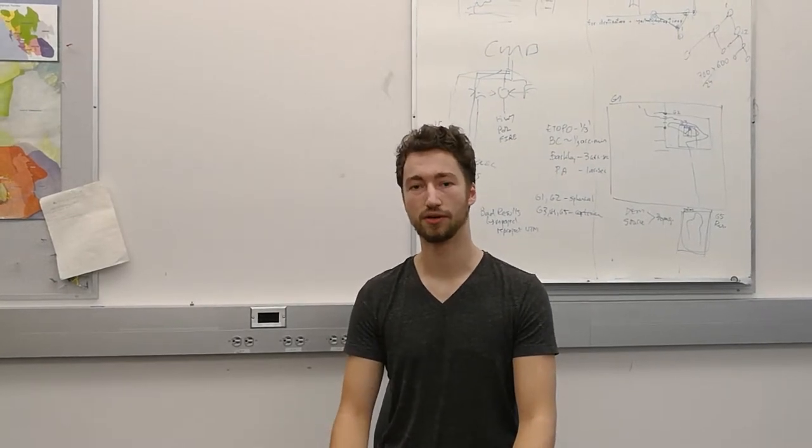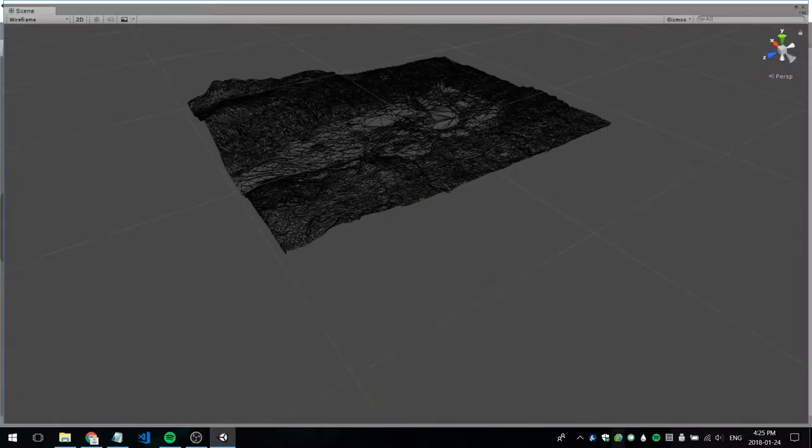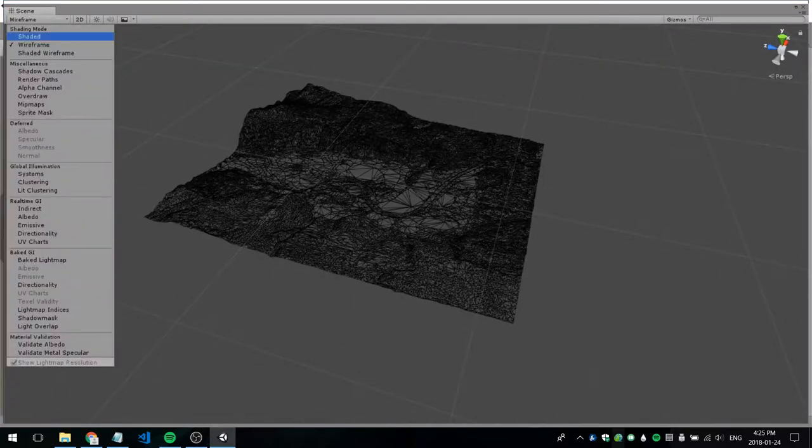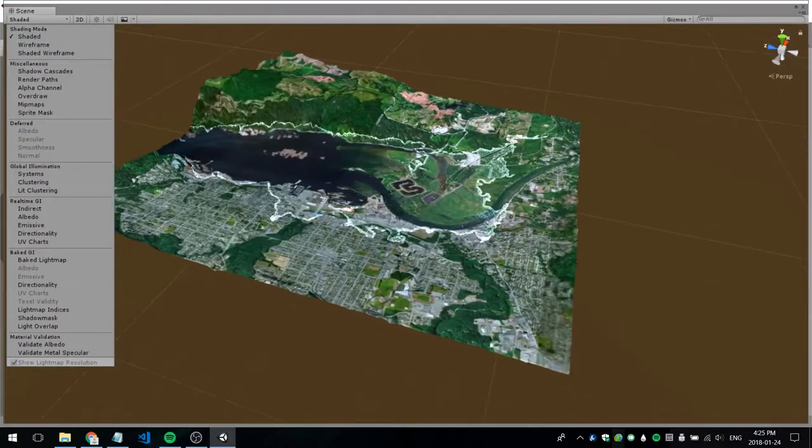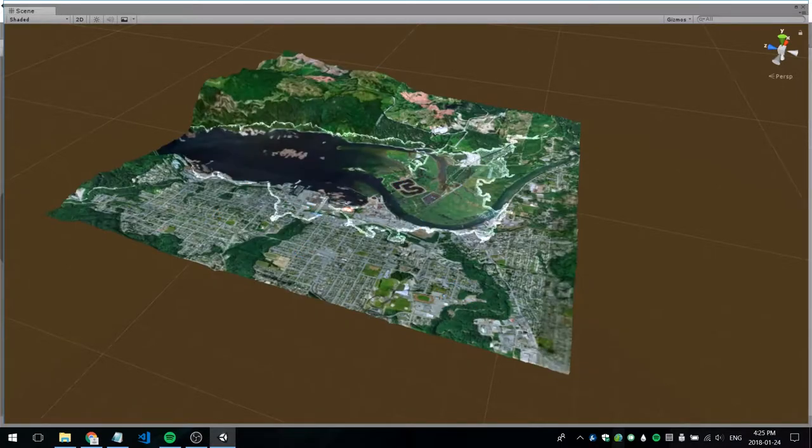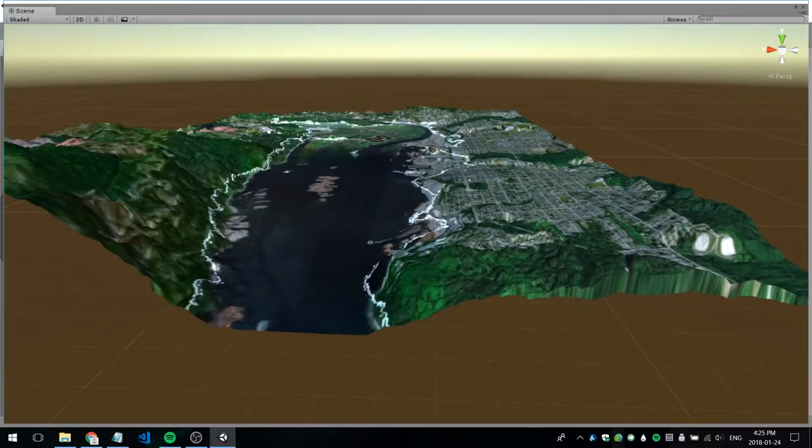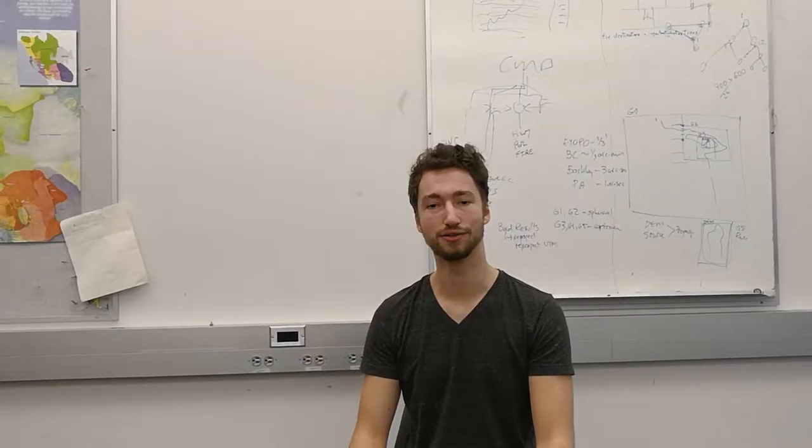I've been working with some data from Ocean Networks Canada, specifically digital elevation model data to make a 3D map of Port Alberni. I've also been getting some simulation data that I've been using to see how far the tsunami will go up into Port Alberni and been finding ways to render that.